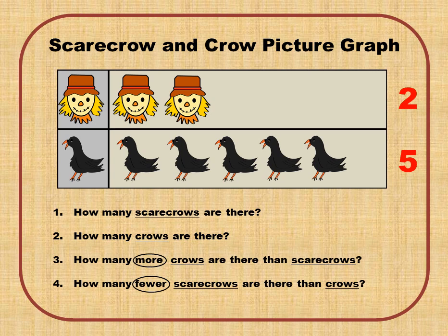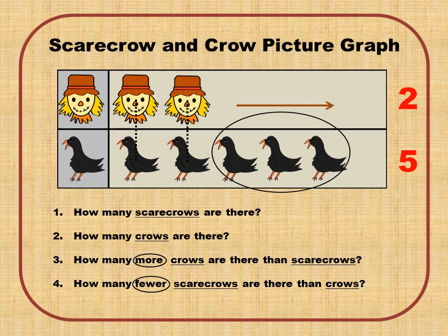Question number three says: how many more crows are there than scarecrows? We're going to match them up — scarecrow to crow, scarecrow to crow — then circle the extra ones. If you're still having a hard time, ask yourself: how many more scarecrows would I need in order for them to be equal? You would need to add three more scarecrows for it to equal the crows.